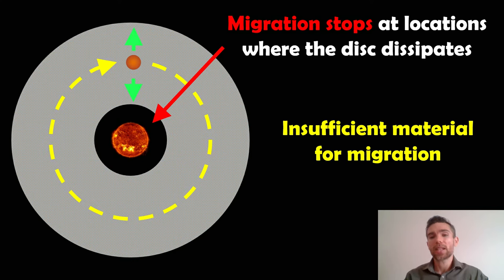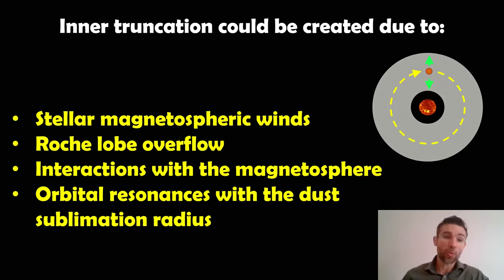We suspect that this inward migration is going to stop when the disk dissipates. The disk does not go all the way up to the star. It has an inner truncated edge, like a sharp edge to that disk where it stops. We suspect that once the planet makes it close to that, that inward migration is then going to stop. There's insufficient material to migrate. Why do we need material? Well, the migration occurs due to the interaction between the planet and the disk.